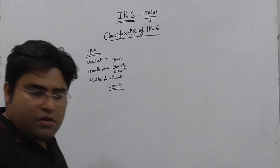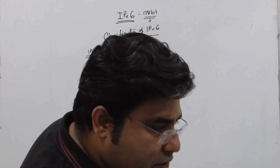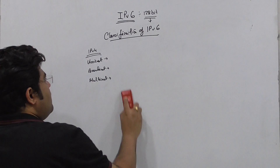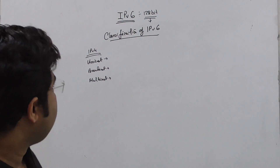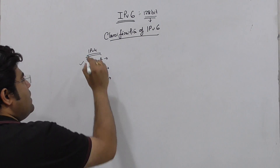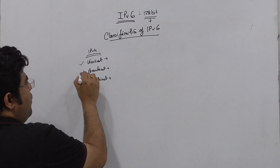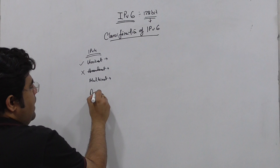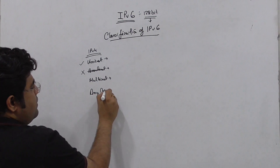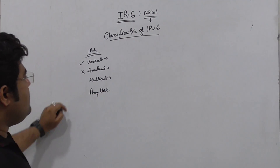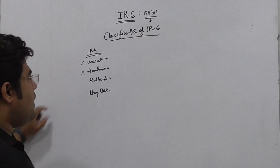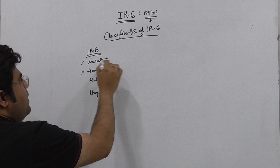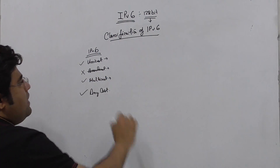Now if we look at IPv6, we don't have broadcast. In IPv6 we have to look at unicast, multicast, and anycast. So IPv6 has three types: unicast, multicast, and anycast.